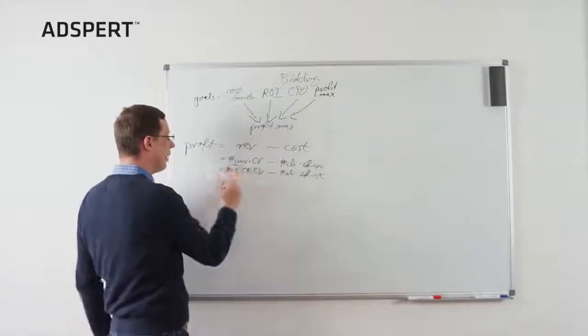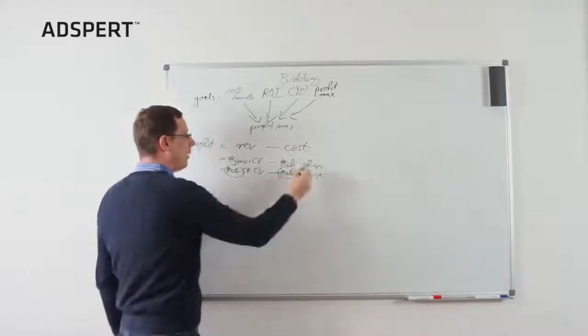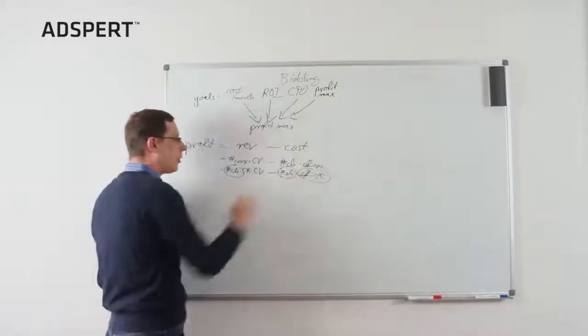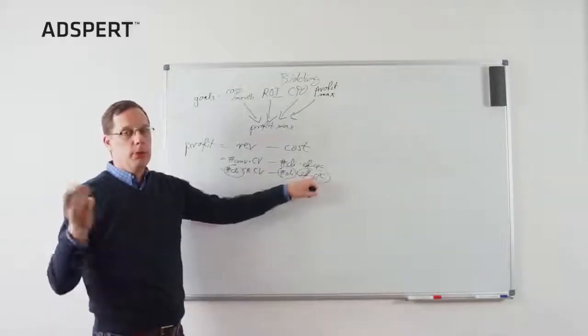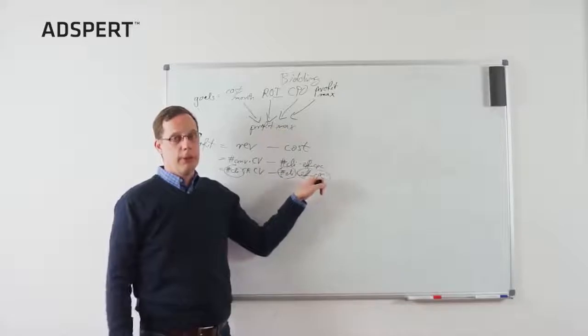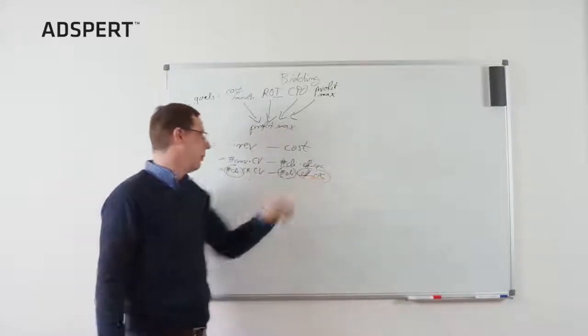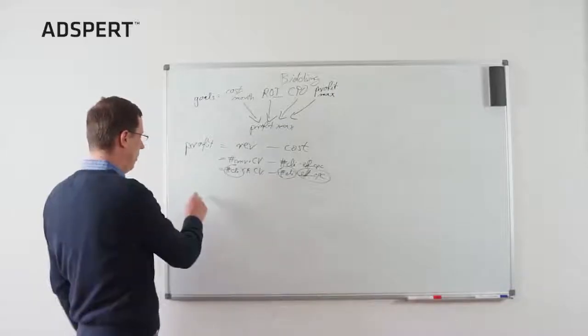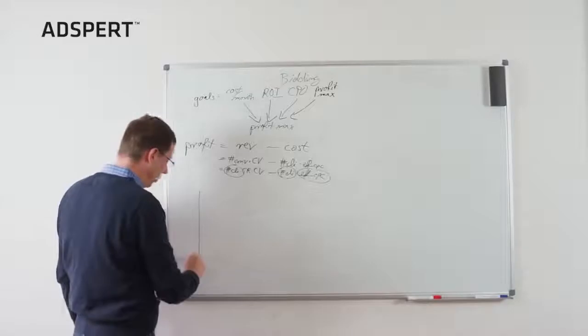Obviously, we have the number of clicks. Here again, nothing new. And the effective CPC curve. Let's talk about this first. Of course, if you increase the bids, you have to pay more. The effective CPC will increase if you bid two dollar. Of course, you have to pay more than only bidding one dollar. So what does it look like?